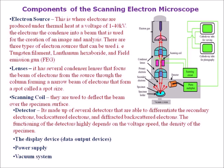Next is the scanning coil, which is used to deflect the beam over the specimen surface. The detector is made up of several detectors that are able to differentiate secondary electrons, backscattered electrons, and diffracted backscattered electrons. The functioning of the detectors highly depends on the voltage, speed, and density of the specimen. Next is the display device, data output device, then power supply and vacuum system.